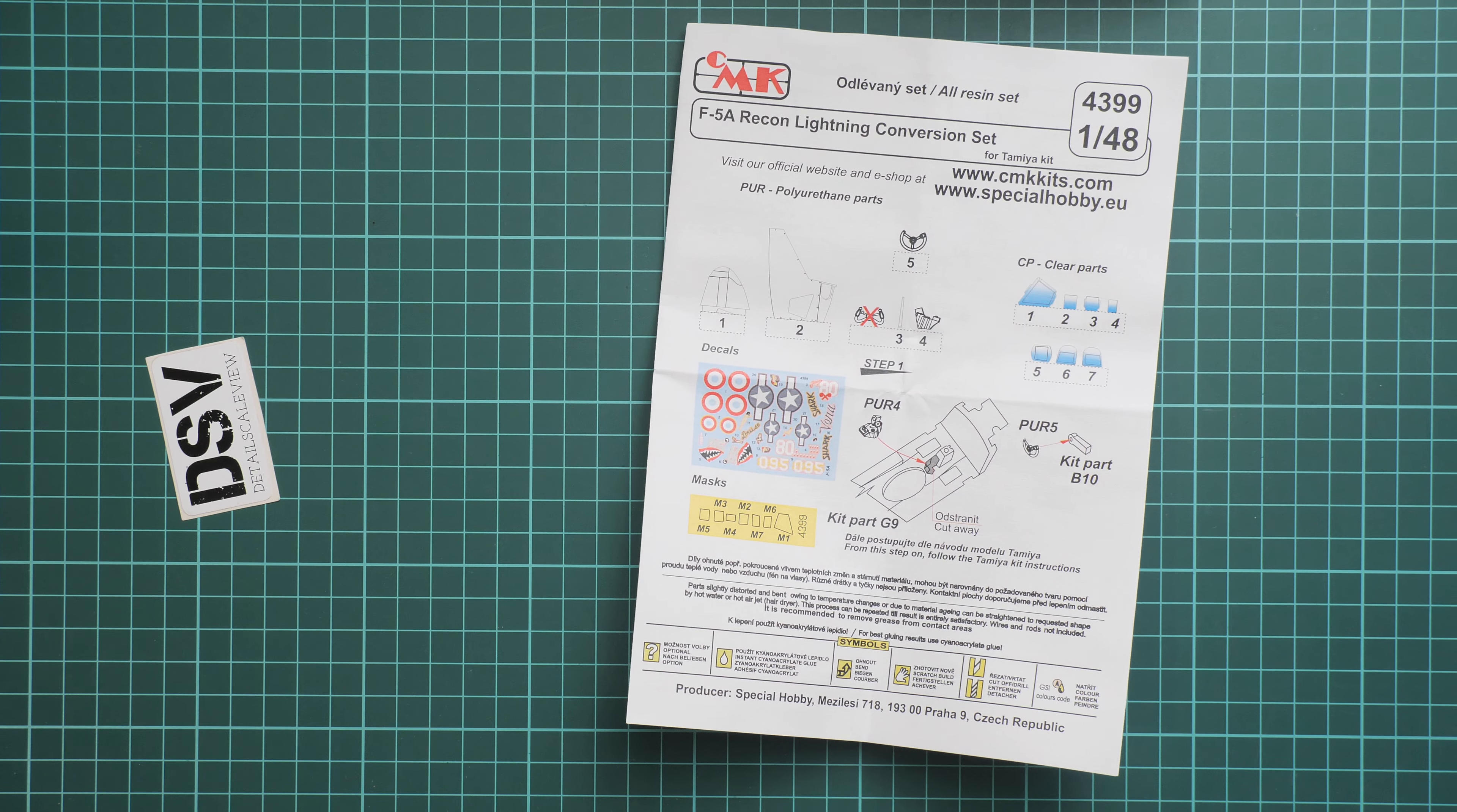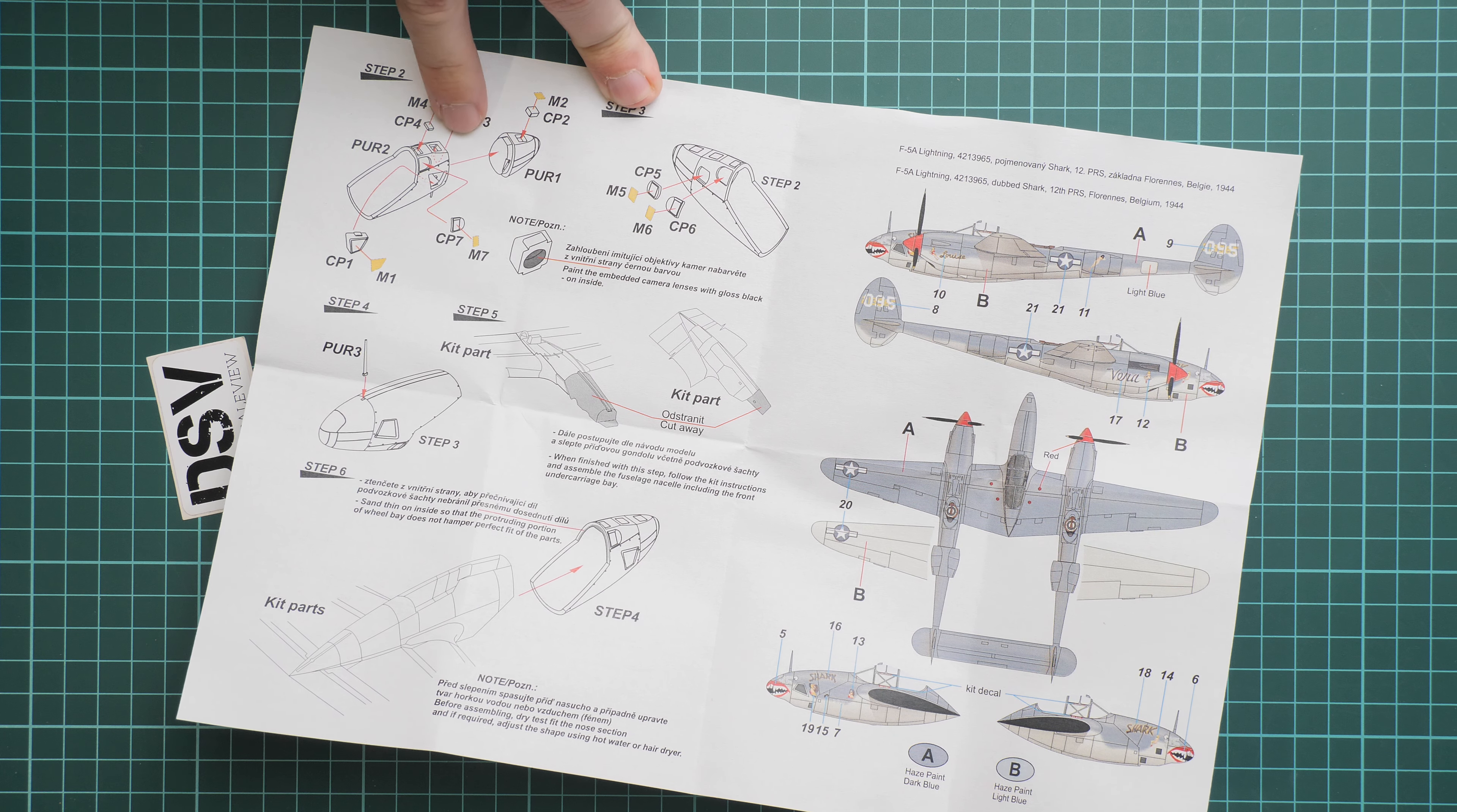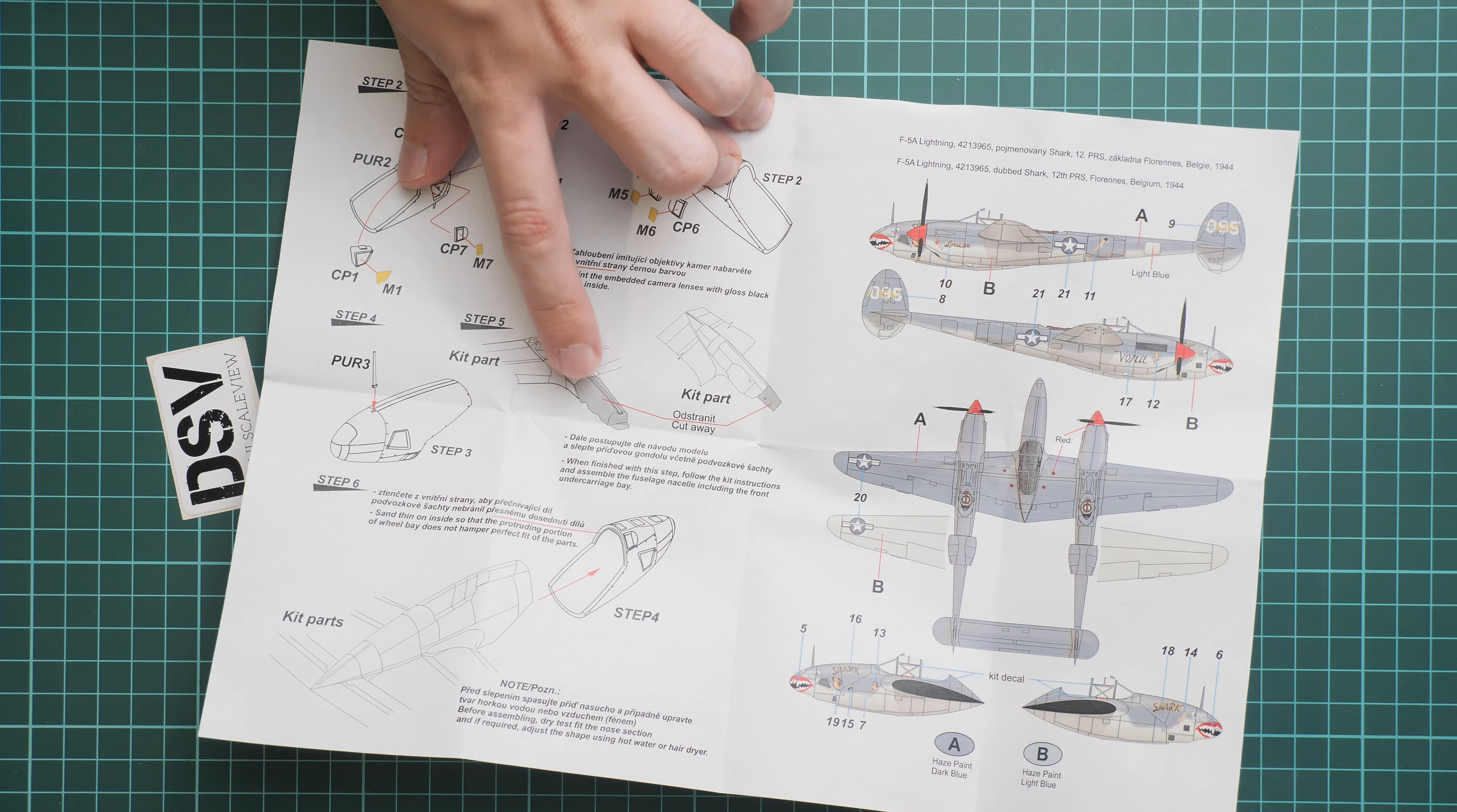You first modify the cockpit, then you follow the original instructions. Then the most fun thing starts. You will have to assemble these two nose parts together, then install these clear sections into the cutouts, then paint the embedded camera lenses with gloss black.